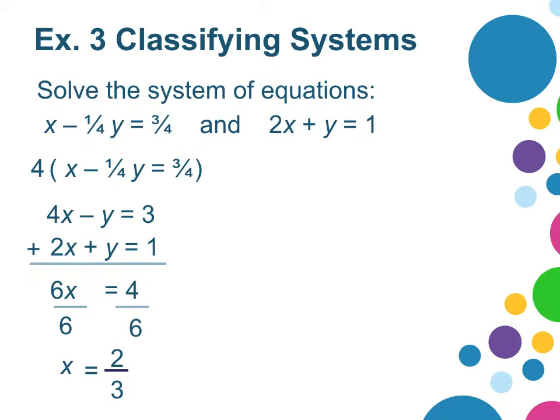So I do have an x-coordinate where the two lines intersect. I'm going to substitute that x-coordinate into either equation to solve for y. I'll choose the second equation. I get 4 thirds plus y equals 1. I'll think of that 1 as 3 thirds. So I get y equals negative 1 third.